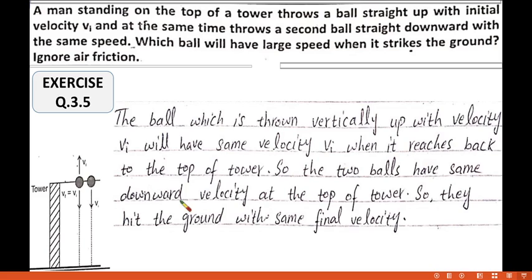So the two balls have the same downward velocities at the top of tower, so they hit the ground with same final velocities. However, they have different times, but the speed will be same in both cases.